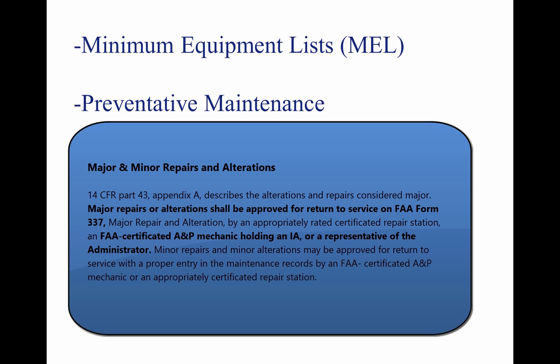Repairs and Alterations are classified as either Major or Minor. 14 CFR Part 43, Appendix A, describes alterations and repairs considered Major. Major repairs or alterations shall be approved for return to service on FAA Form 337, Major Repair and Alteration, by an appropriately rated certificated repair station, an FAA-certificated A&P mechanic holding an IA, or a representative of the Administrator. Minor repairs and minor alterations may be approved for return to service with a proper entry in the maintenance records by an FAA-certificated A&P mechanic or an appropriately certificated repair station.